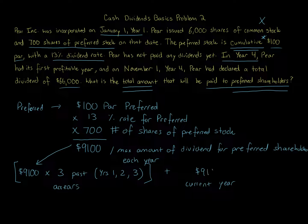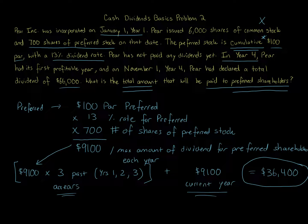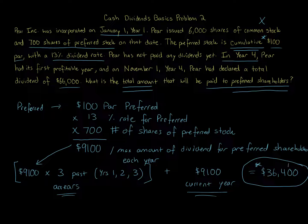So it's $9,100 times four: three of those $9,100 amounts are arrears from past years, and one is the current year amount. We do that calculation and get $36,400 — that is our answer. The question asked how much preferred shareholders get, and the answer is $36,400. To go one step further: common shareholders get the remaining amount — $66,000 minus $36,400 — which is $29,600. Preferred gets paid first; common gets whatever is left. The final answer is $36,400 to preferred shareholders.